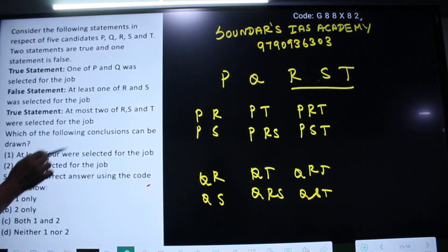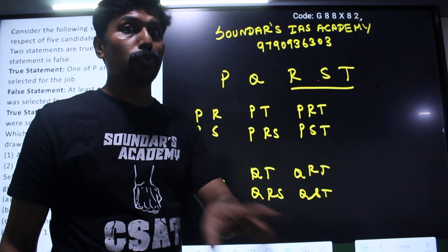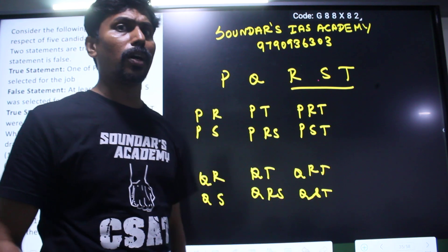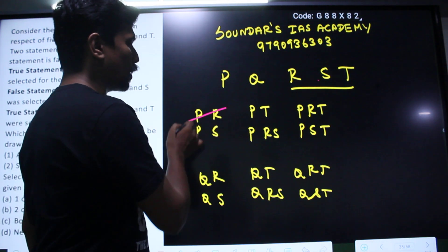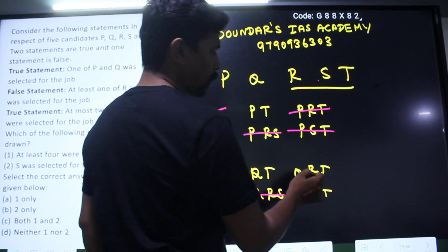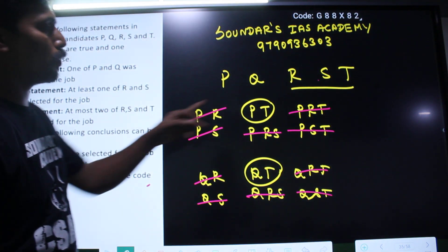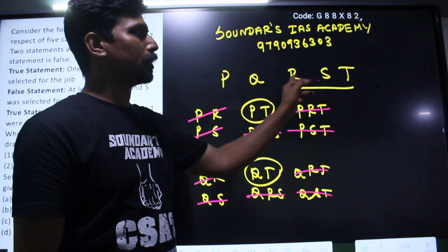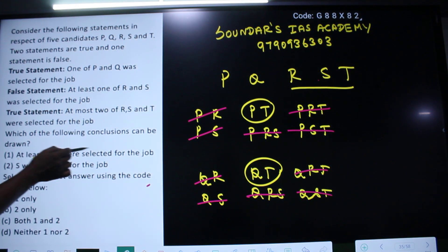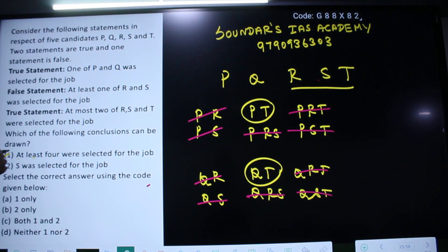Q selected: Q,R; Q,S; Q,T; Q,R,S; Q,R,T; Q,S,T. This is the false statement — at least one of R and S was selected for the job. Checking: at least one of R and S selected for the job. R and S — at least one of R and S selected for the job.